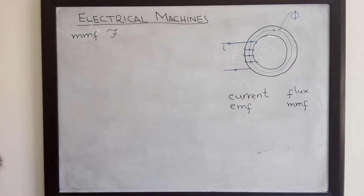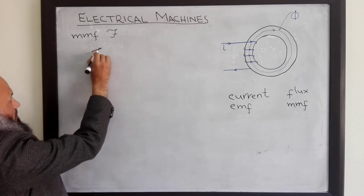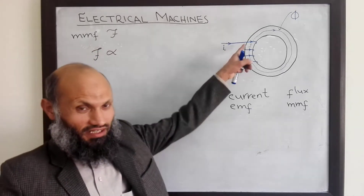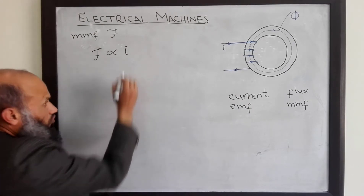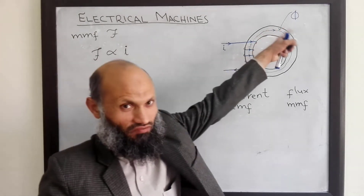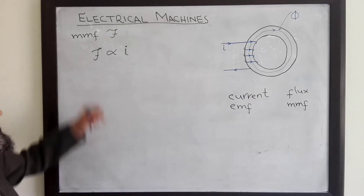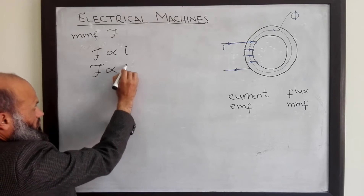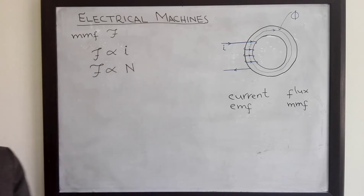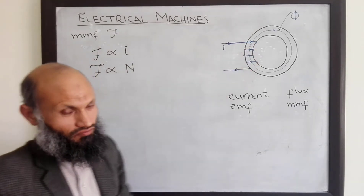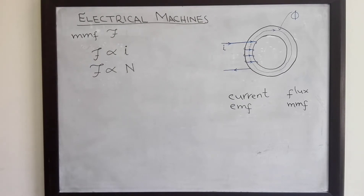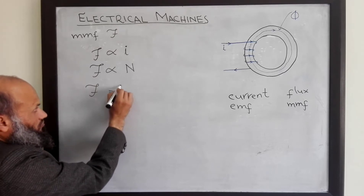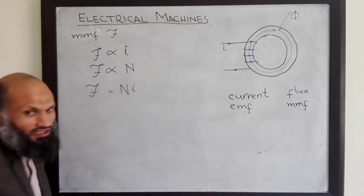This MMF, magnetomotive force, is proportional to the current in this circuit. More is the current, more will be the flux lines and more will be the MMF. Furthermore, MMF is also proportional to the number of turns of wire wound on the steel ring. That is, MMF (magnetomotive force) is equal to number of turns multiplied by the current.